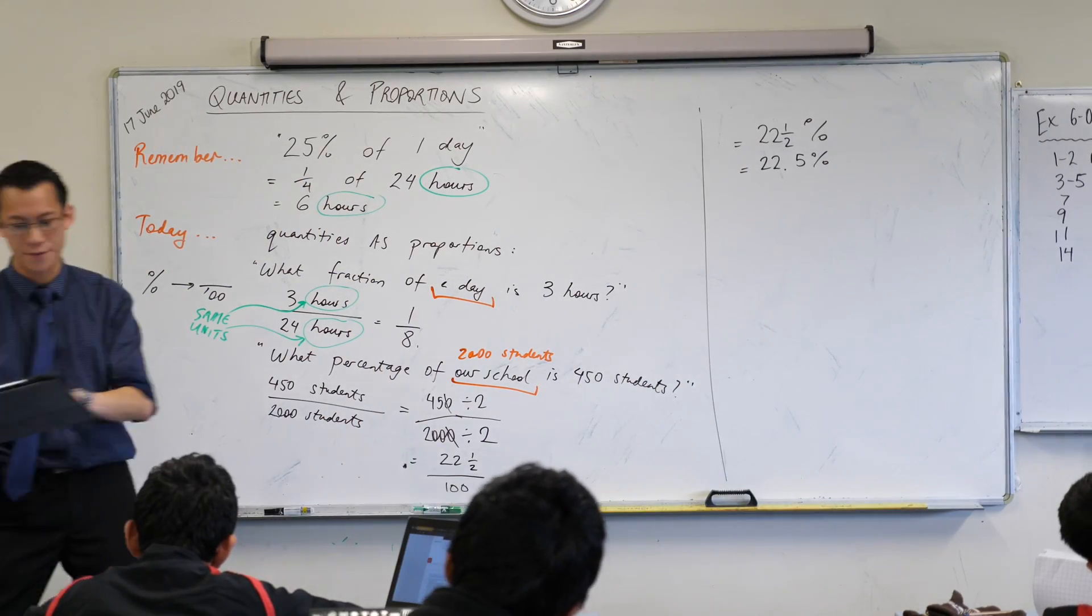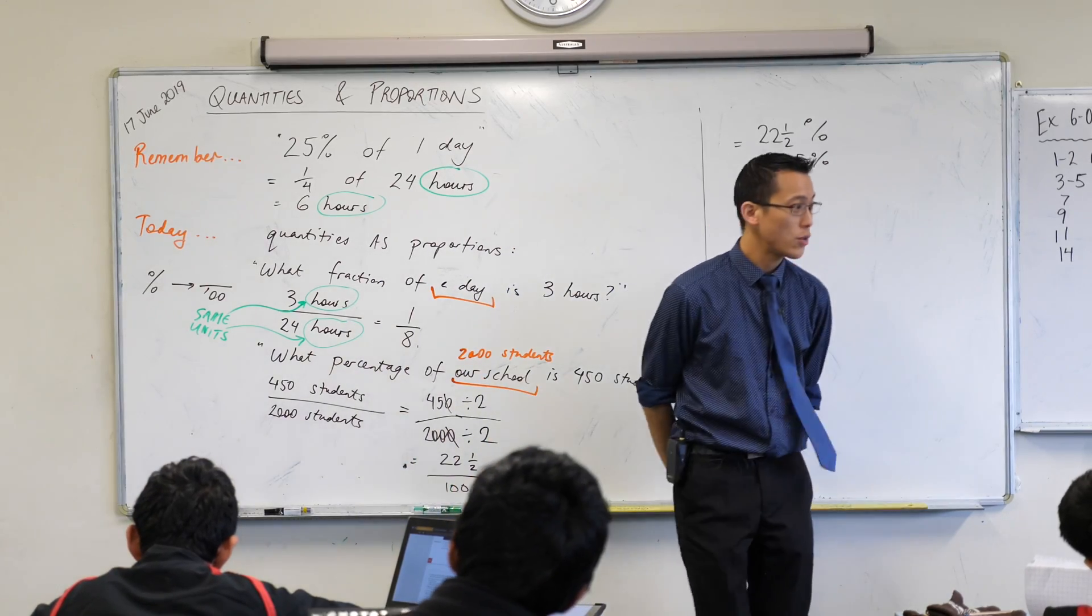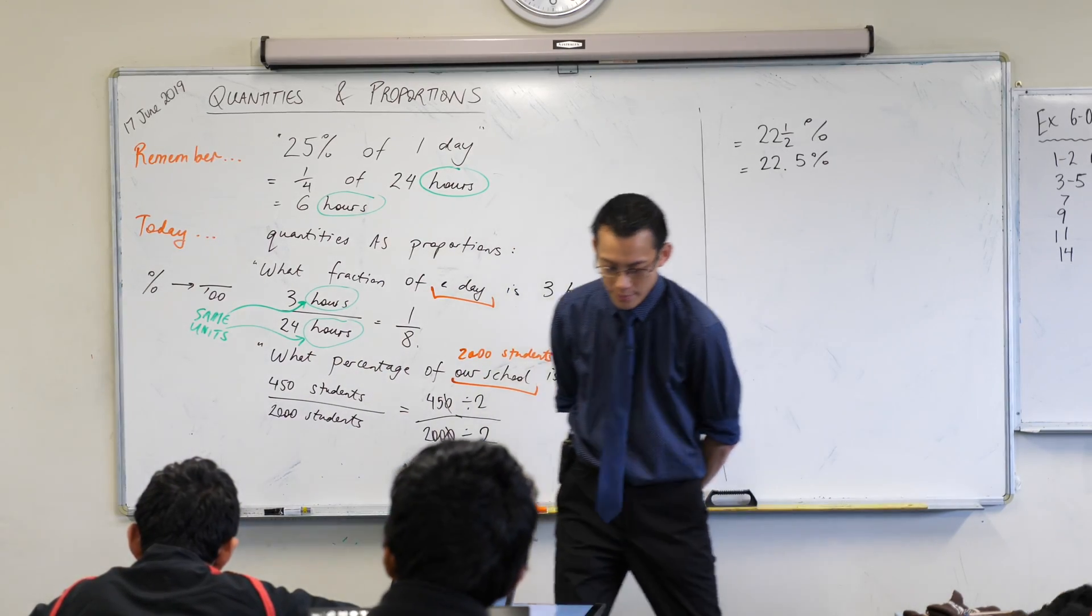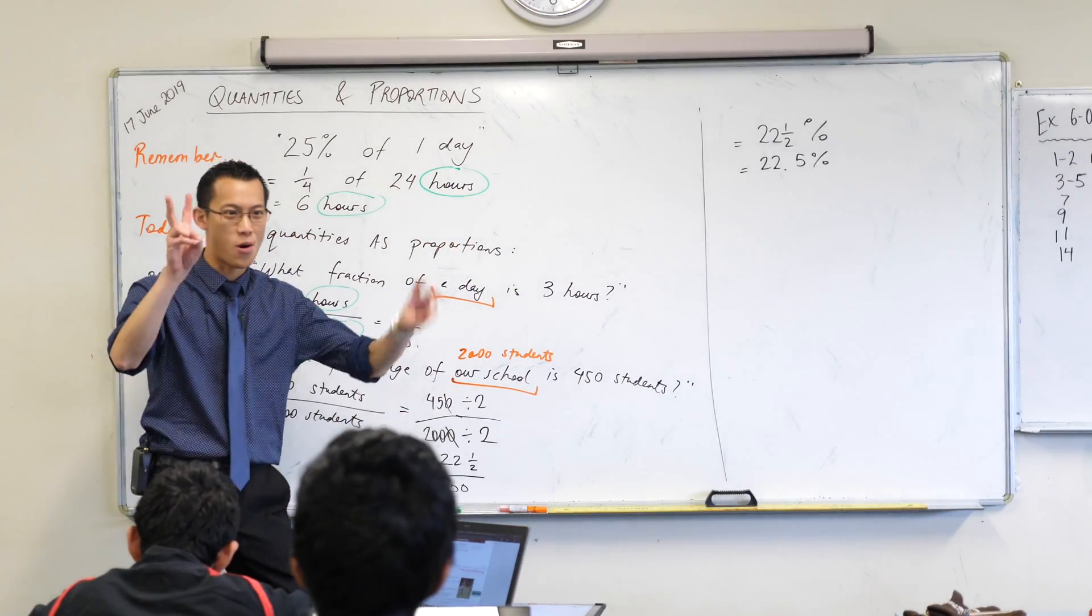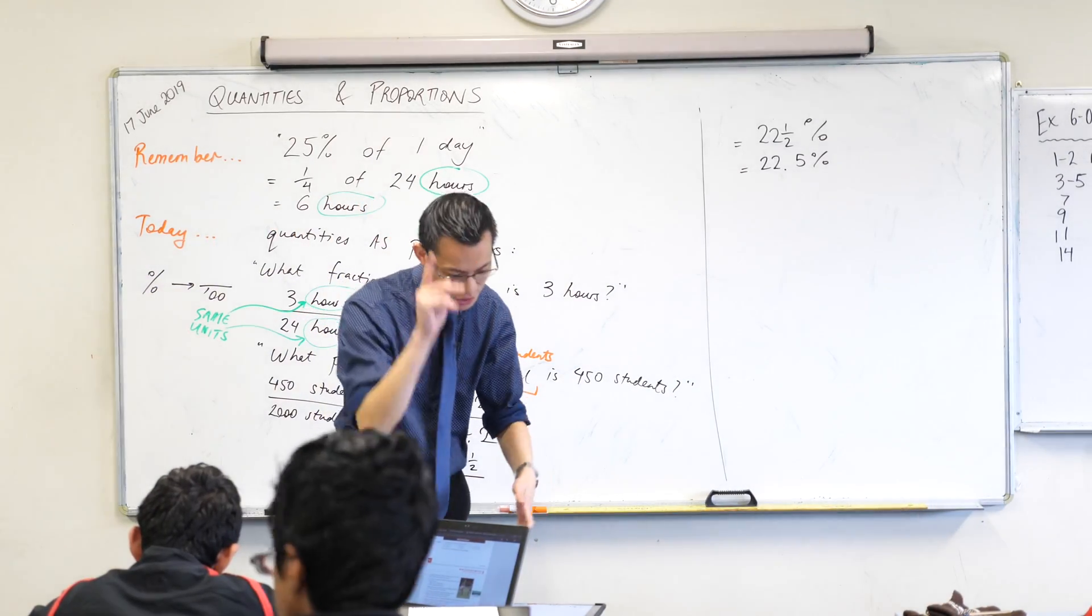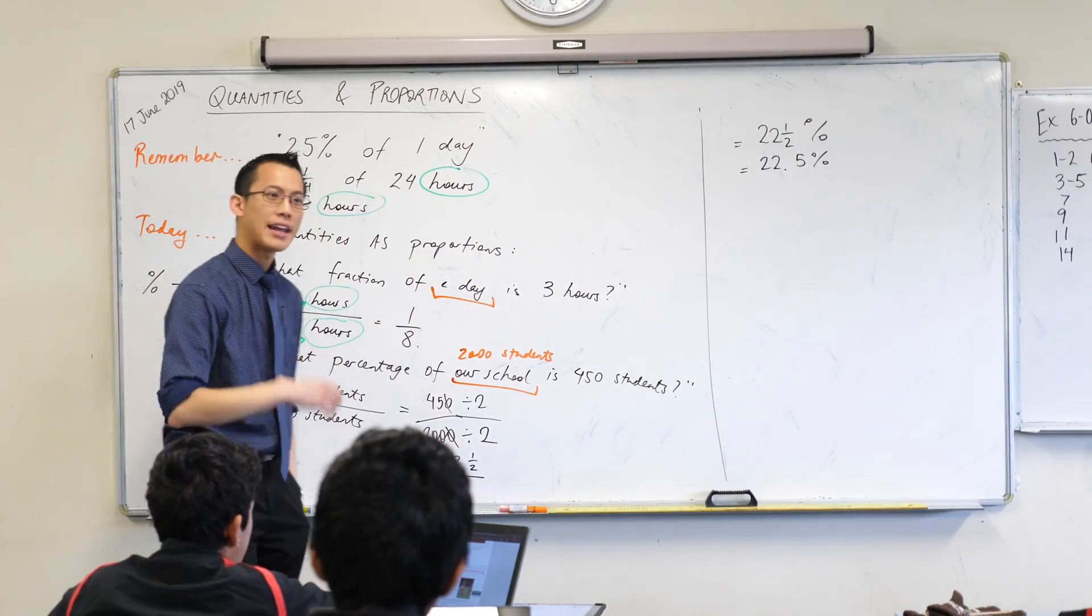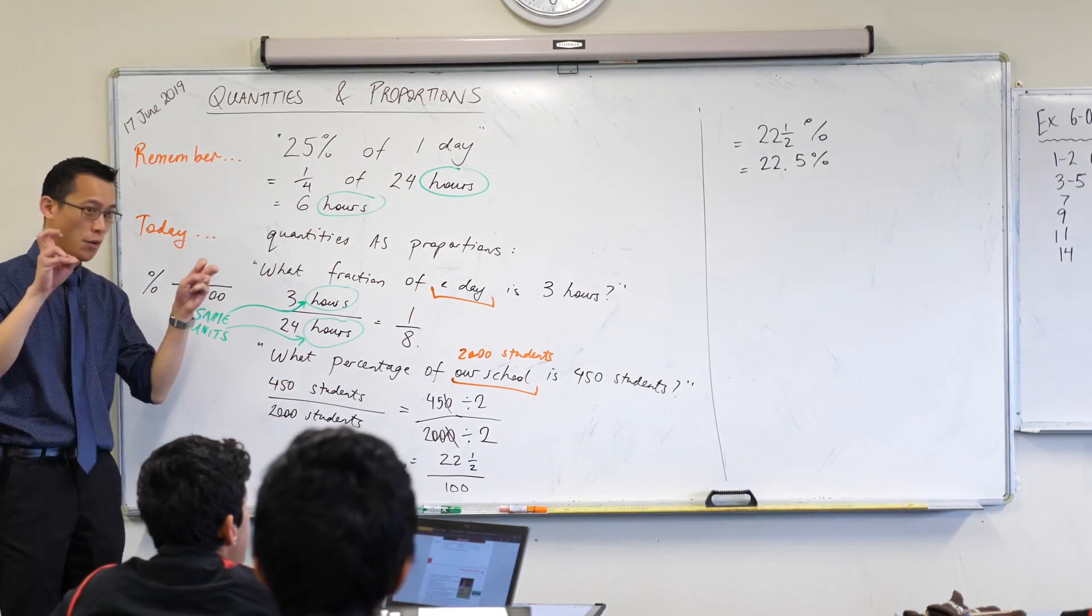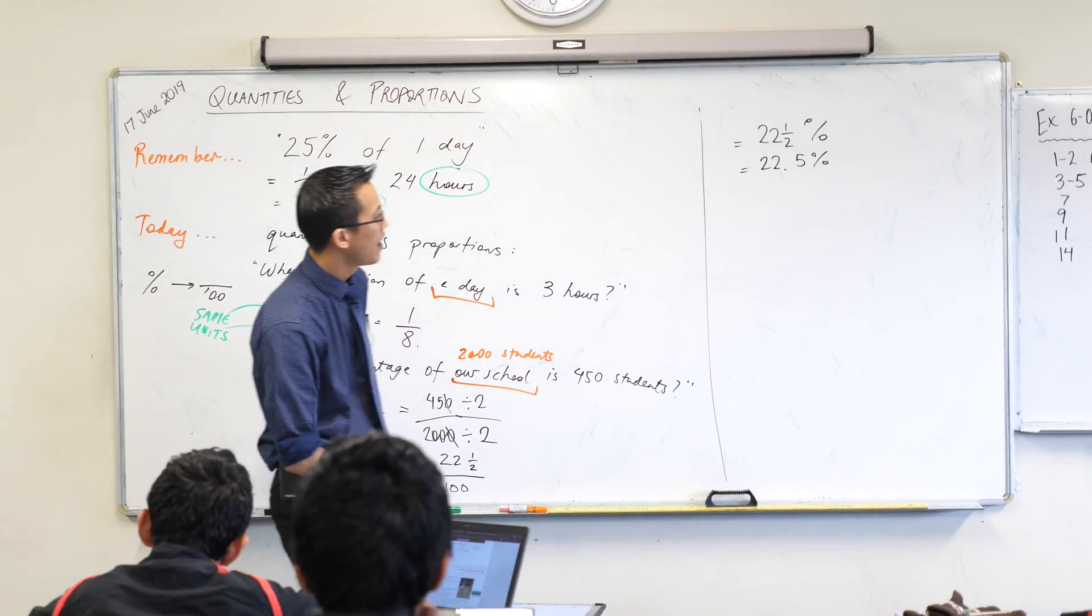Question four. This is the first question I have not assigned. I just want us to look at it together. Read question four, just the wording. What's the whole amount? There's three numbers that I can see there, but only one of them is the whole amount. Which one is it? 25 students. 25 students. You can see in a class of 25 students. Now, usually the whole amount will be the biggest number that you see, but not always. Okay?